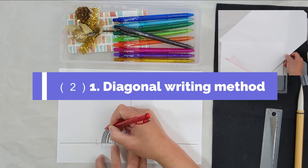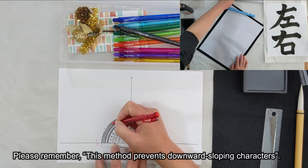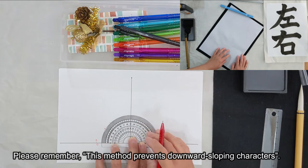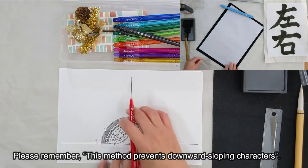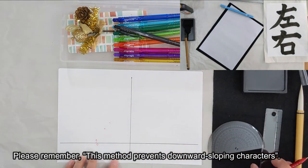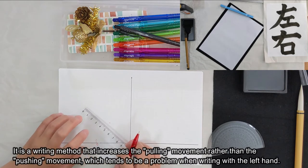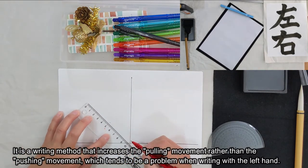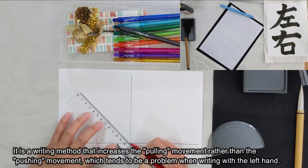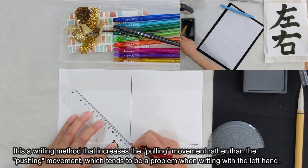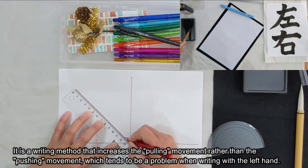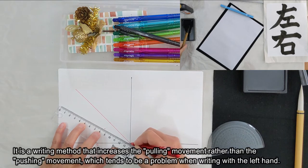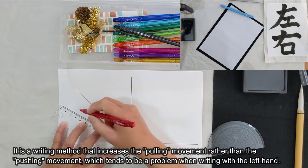Number 2: Diagonal writing method. Please remember this method prevents downward sloping characters. It is a writing method that increases the pulling movement rather than the pushing movement, which tends to be a problem when writing with the left hand.